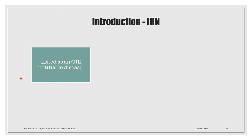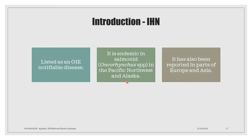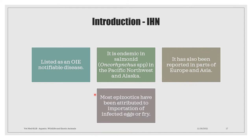IHN is considered to be listed as an OIE notifiable disease. It is considered to be endemic in the salmonid Oncorhynchus species in the Pacific Northwest and Alaska. It has also been reported in parts of Europe and Asia, and most epizootics have been attributed to the importation of infected eggs or fry.